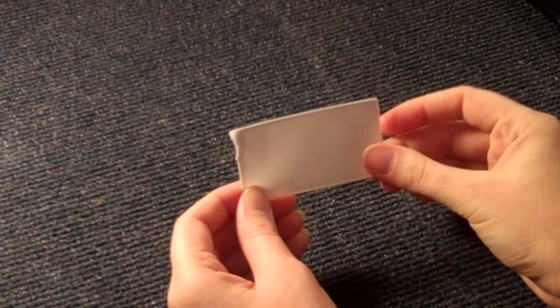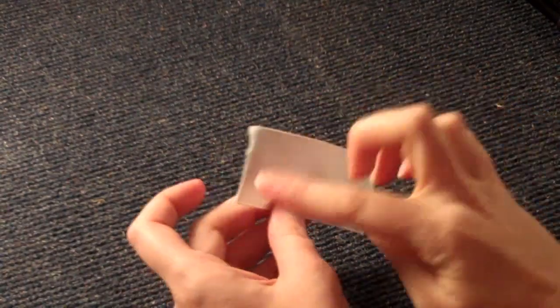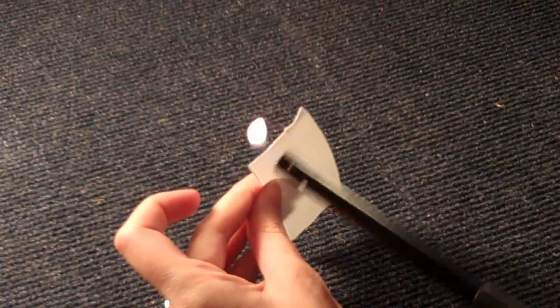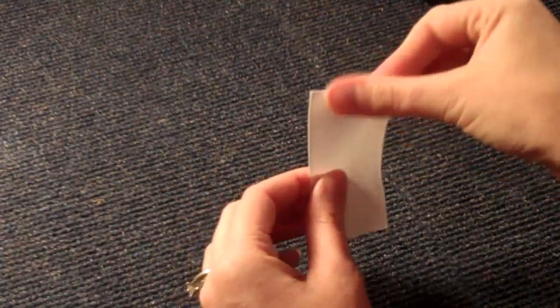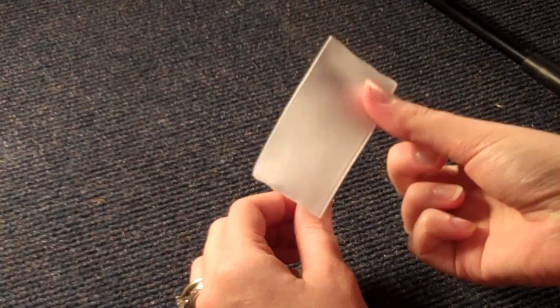First things first, we're going to take our piece of white one and a half inch ribbon and we're going to heat seal both ends. Very important that you heat seal all your ribbon ends. This piece is going to be the bunny's head.